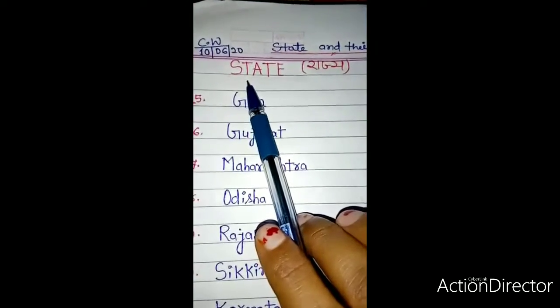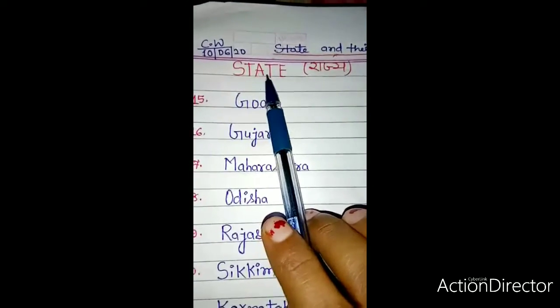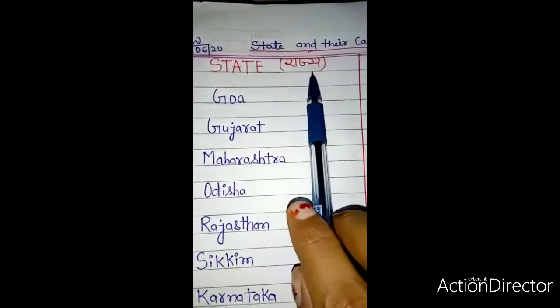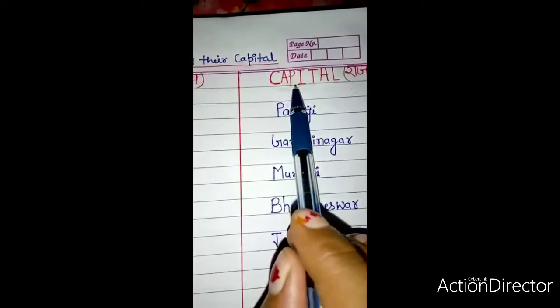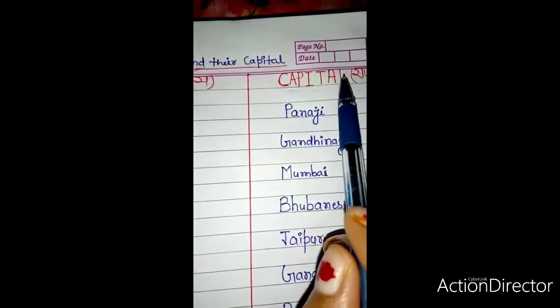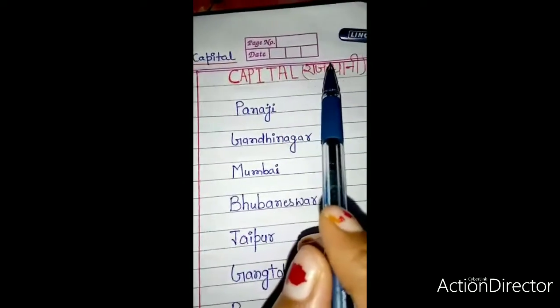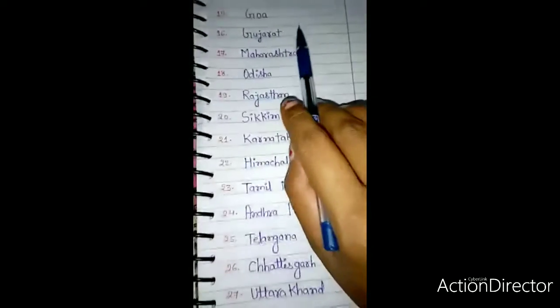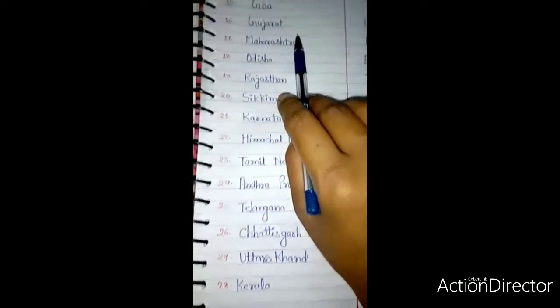Now look here. State — S-T-A-T-E — state means Raj. Capital — C-A-P-I-T-A-L — capital means Raj Dhani. Today we will study the remaining 14 states and their capitals.